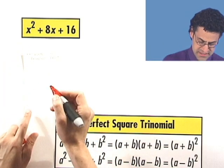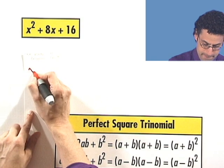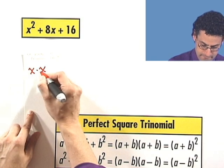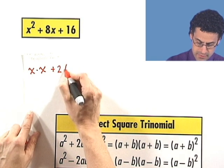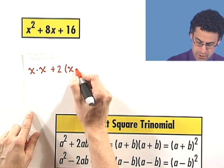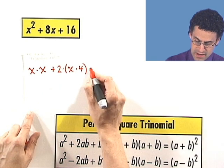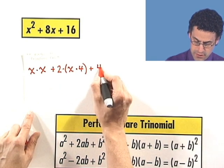This is actually x times x. I can write this term as 2 times x times 4. And I can write the 16 as 4 times 4.